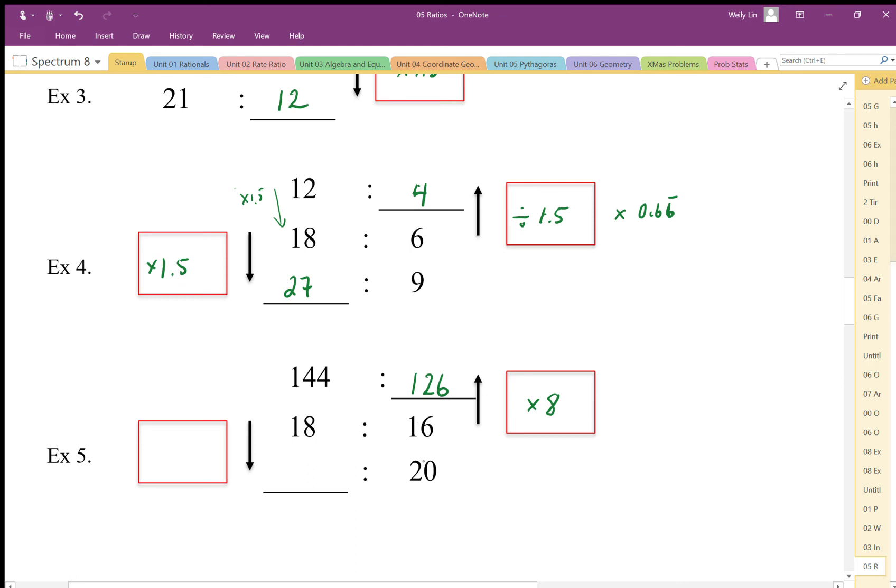Going from middle to bottom, 20 divided by 16—that's going to give us 1.25. So I'm going to times by 1.25. So 18 times 1.25, that's going to give us a decimal value. It's going to give us 22.5.